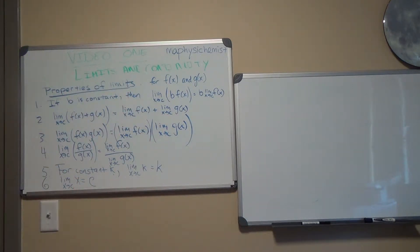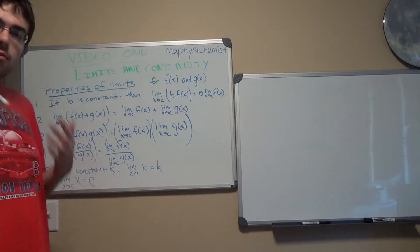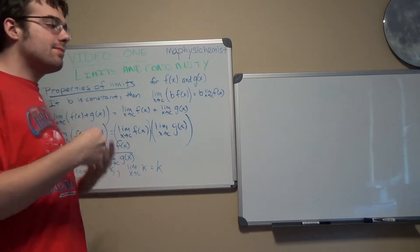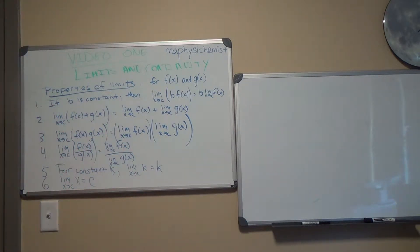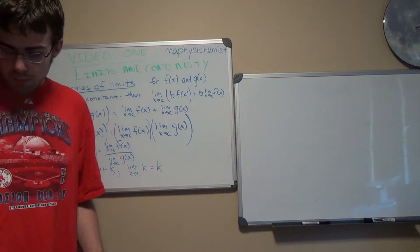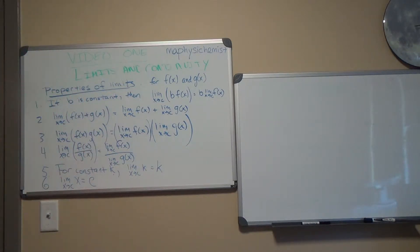And then the sixth type is the limit as x goes to c of x is c. So the best way to approach this is to just do simple examples.